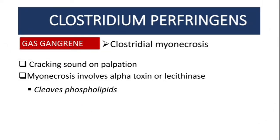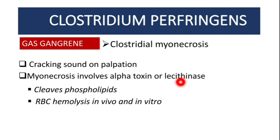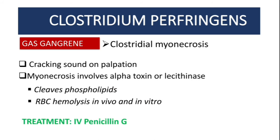This is the presentation of gas gangrene. The toxins have the ability to cleave the phospholipids found on the cell membrane, and they also cause RBC hemolysis both in vivo — in the living organism — and in vitro, which is experimental and occurs in test tubes. For treatment of gas gangrene, we use intravenous penicillin G.